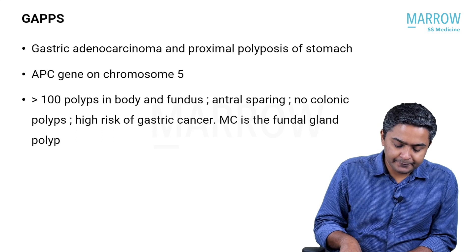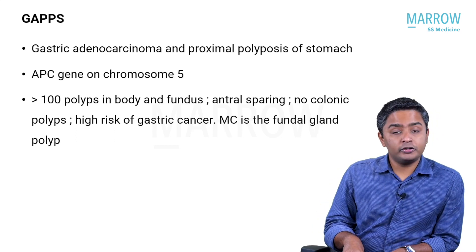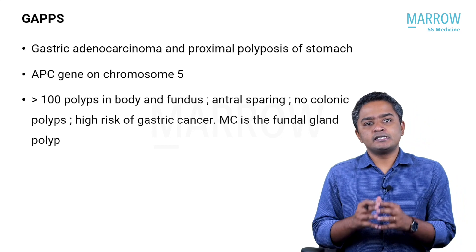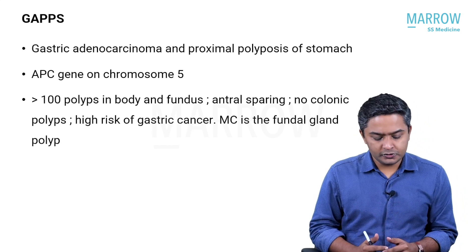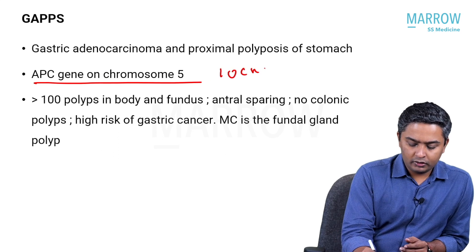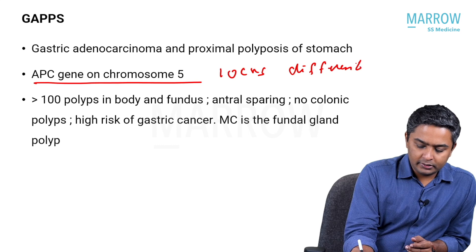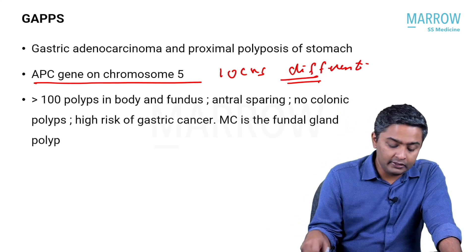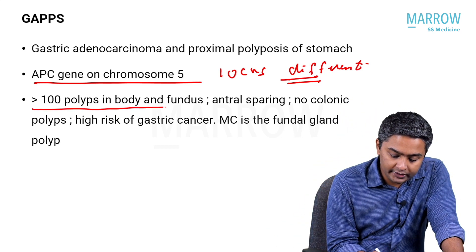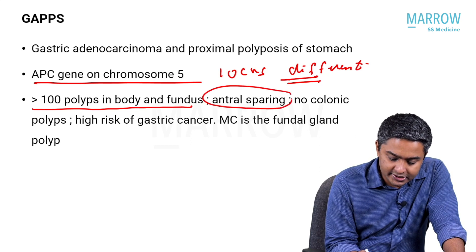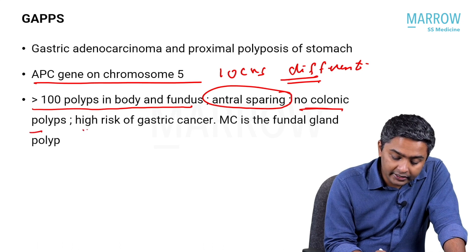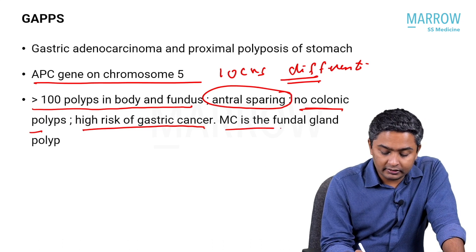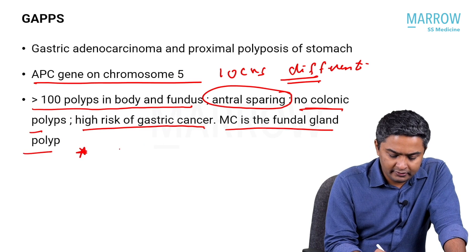GAPPS — gastric adenocarcinoma and proximal polyposis of stomach syndrome — involves the same gene as FAP, same chromosome, just a different locus. Here the predominant manifestations happen in the stomach. You will have more than 100 polyps in the body and fundus. The antrum is spared. Characteristically, there are no colonic polyps and there is high risk of gastric cancer. The most common primary in GAPPS is the fundal gland polyp.